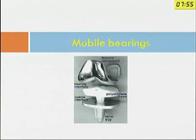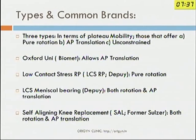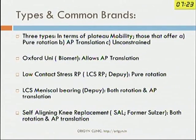The first implant I am going to talk about is the mobile bearing implant. There are three types of commonly available mobile bearing implants, determined by the nature of poly mobility: those that offer pure rotation, those that offer AP translation, and the unconstrained type. The Oxford Uni allowed AP translation; the Low Contact Stress by DePuy allows pure rotation; and the meniscal bearing implant by DePuy allows both rotation and AP translation. The former Sulzer had a self-aligning knee replacement which also allowed both rotation and AP translation.